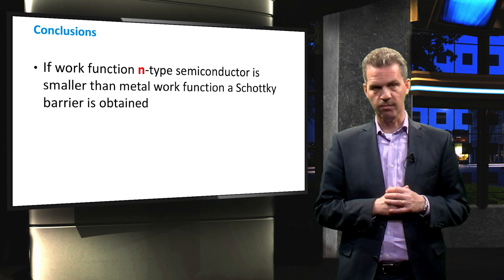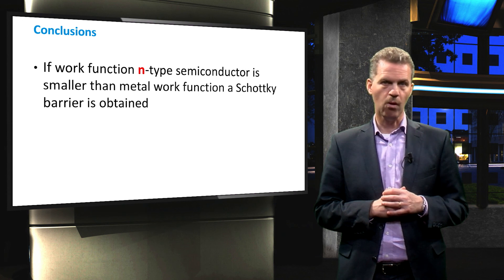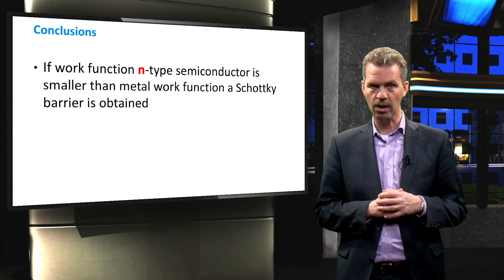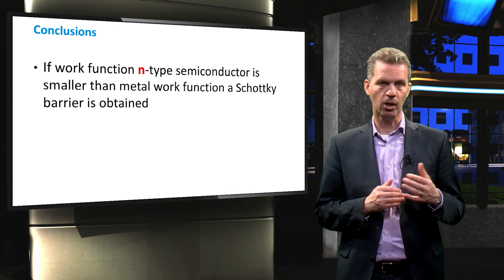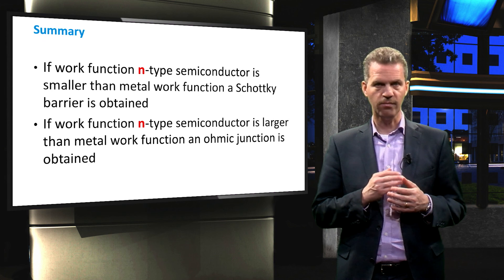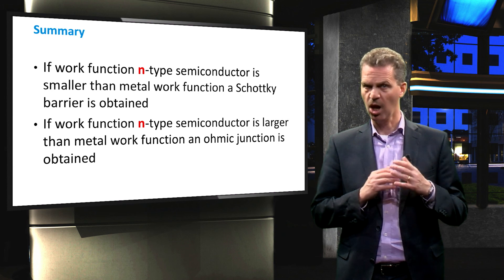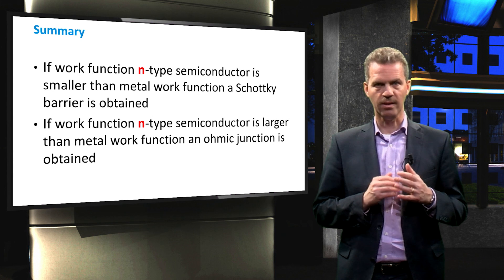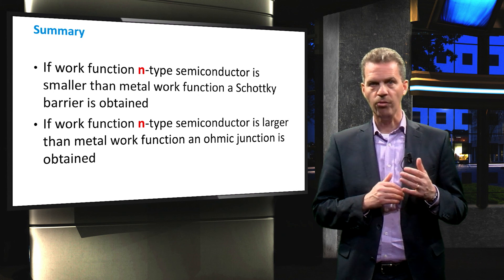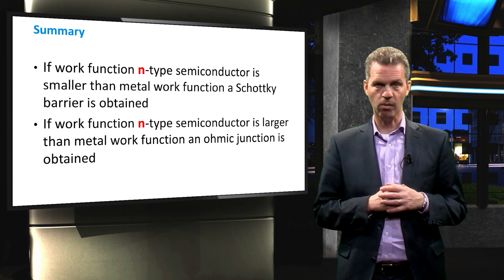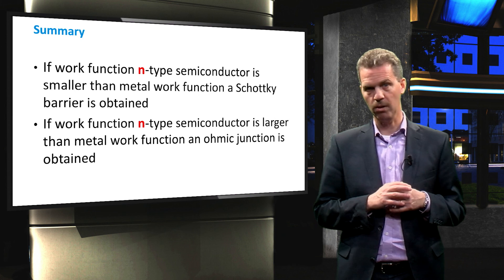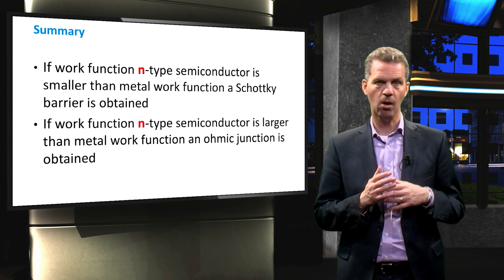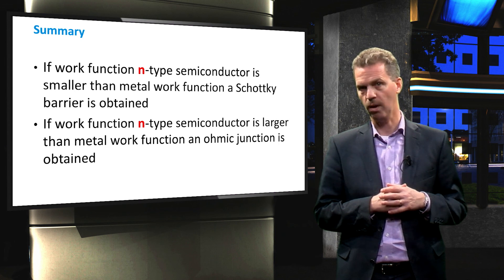We can now summarize this video. We have discussed how to form a metal-semiconductor junction and seen that if the work function of the n-type semiconductor is smaller than the metal work function, we obtain a Schottky barrier junction. Vice versa, if the n-type semiconductor work function is larger, an ohmic junction is obtained. Note that this summary stresses that the semiconductor is n-type. When using a p-type semiconductor, similar properties can be found, though the work functions of the two materials compare in a different way. Please try to find out if the metal work function should be larger or smaller than that of the p-type semiconductor in order to have a Schottky barrier.